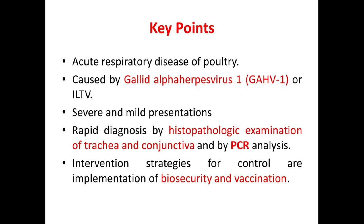Finally, the key points: ILT or Infectious Laryngotracheitis is an acute respiratory disease of poultry caused by Gallid Alpha Herpesvirus 1. It has both severe and mild presentations. The severe form shows characteristic pump handle respiration and blood-stained mouth or trachea. Rapid diagnosis is by histopathologic examination of trachea and conjunctiva, where syncytial cells and intranuclear inclusion bodies are seen, and by PCR analysis. Control strategies include biosecurity and vaccination.